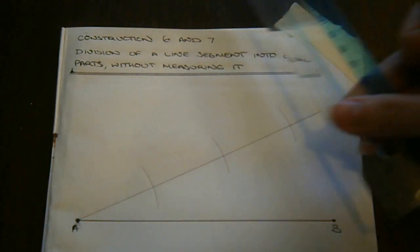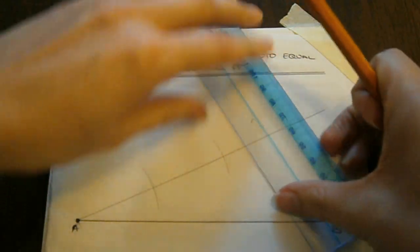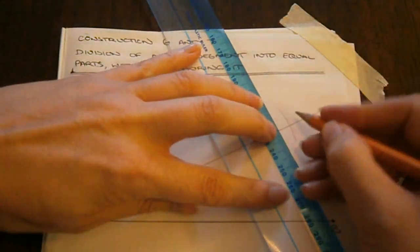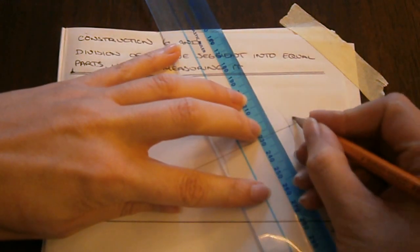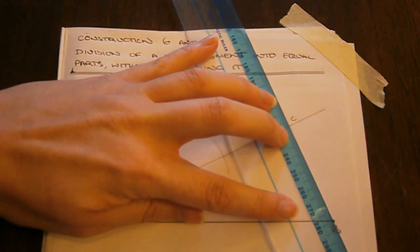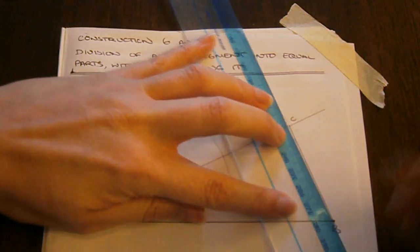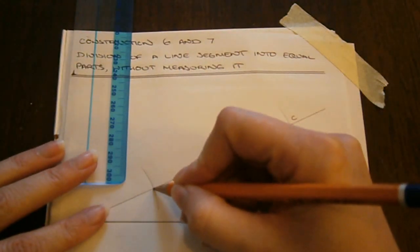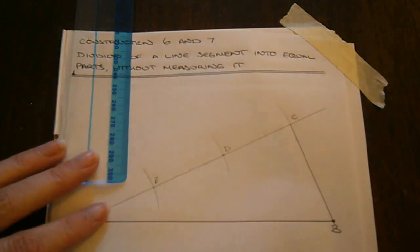I then take my ruler and I draw a line between this point. Let's call this our point C, from C to B. I'll label my other intersection points. Let's call them D and E.